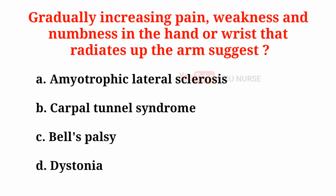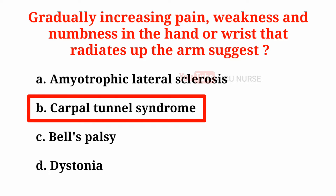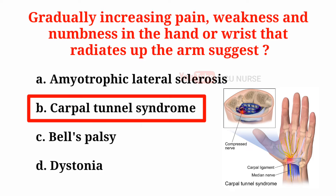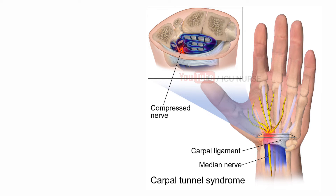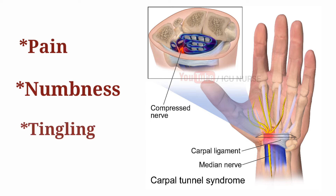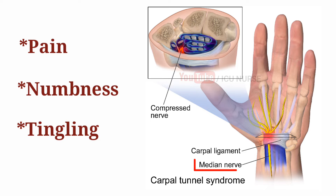Gradually increasing pain, weakness and numbness in the hand or wrist that radiates up the arm suggests: A. Amyotrophic lateral sclerosis, B. Carpal tunnel syndrome, C. Bell's palsy, D. Dystonia. The correct answer is B. Carpal tunnel syndrome. Carpal tunnel syndrome is a common condition that causes pain, numbness and tingling in the hand and arm. The condition occurs when the median nerve is squeezed or compressed as it travels through the wrist.